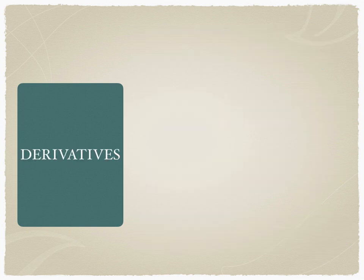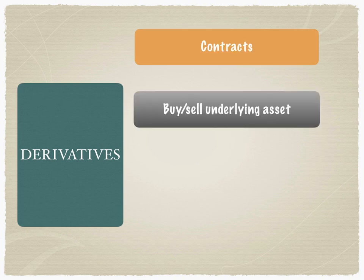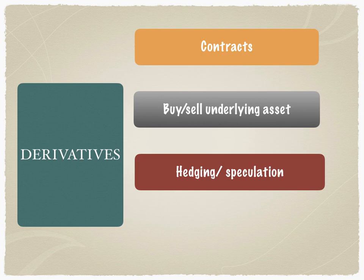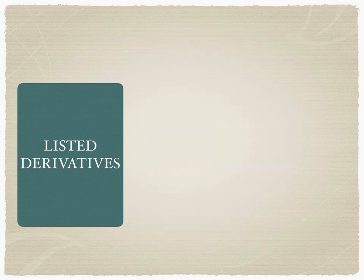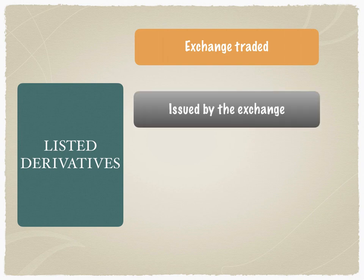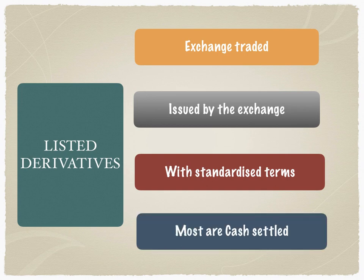Derivatives are contracts to buy or sell the underlying asset in order to hedge or speculate on a particular trade. It is not a capital-raising activity. Listed derivatives are exchange-traded derivatives issued by the exchange with standardized terms and conditions that are applicable to all derivatives.